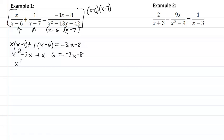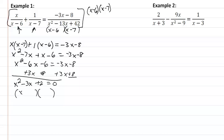So now we have x squared minus 6x minus 6 equal to negative 3x minus 8. Let's move everything over, so we get x squared minus 3x plus 2 equal to 0. That will factor out really nice. So we are going to get x minus 2, x minus 1 equal to 0. So x is going to equal 2 and 1.